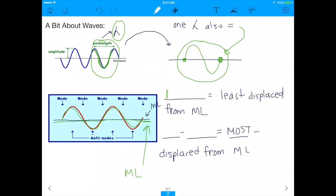Nodes, if you draw a middle line through a wave, pretty much a line that goes straight through the center, nodes are the things that are pretty much right on the middle line. So, everything I'm circling right now is a node, because it's on the line. It's the least displaced from the middle line.